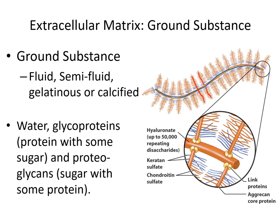Attached to the amino acids are chains of sugar. These fine filaments are made out of two types of sugar: one known as keratan sulfate and the other known as chondroitin. Don't get keratan mixed up with keratin — keratin is a protein, keratan is a sugar. Chondroitin sulfate is found in large amounts in cartilage; chondros means cartilage.